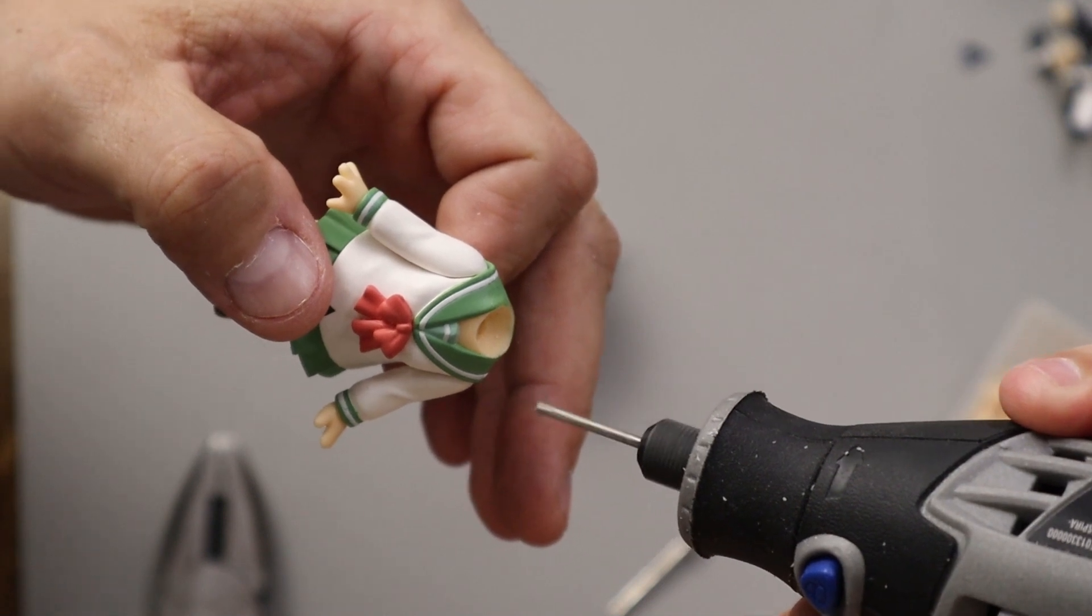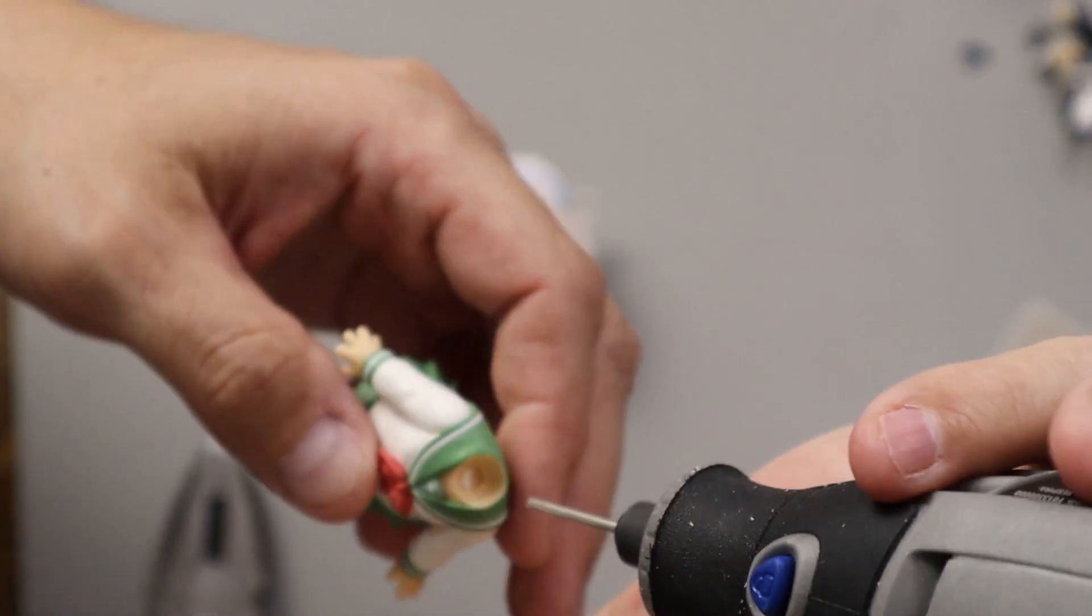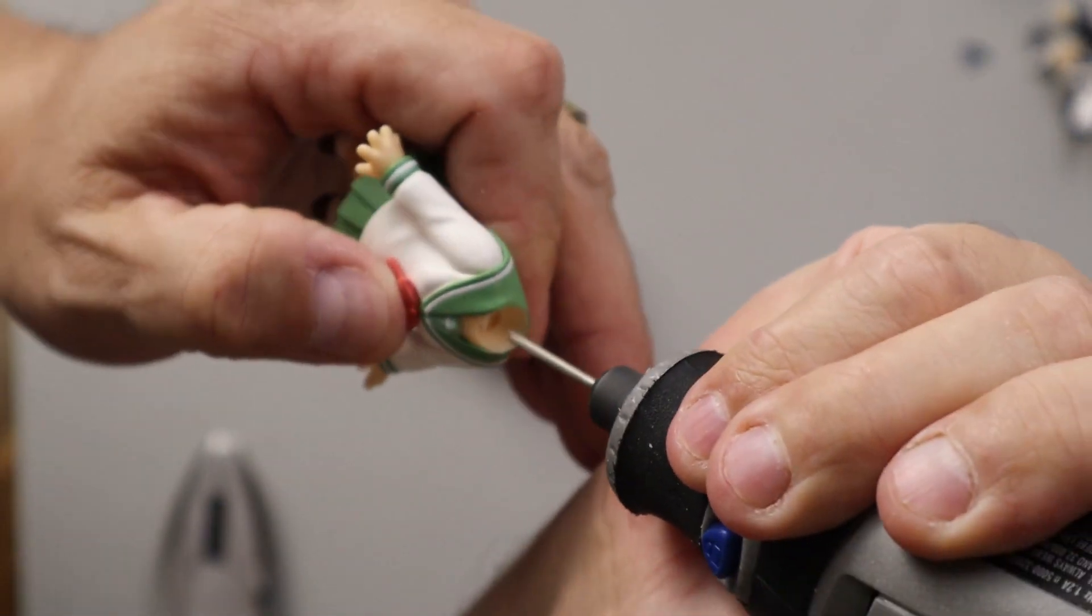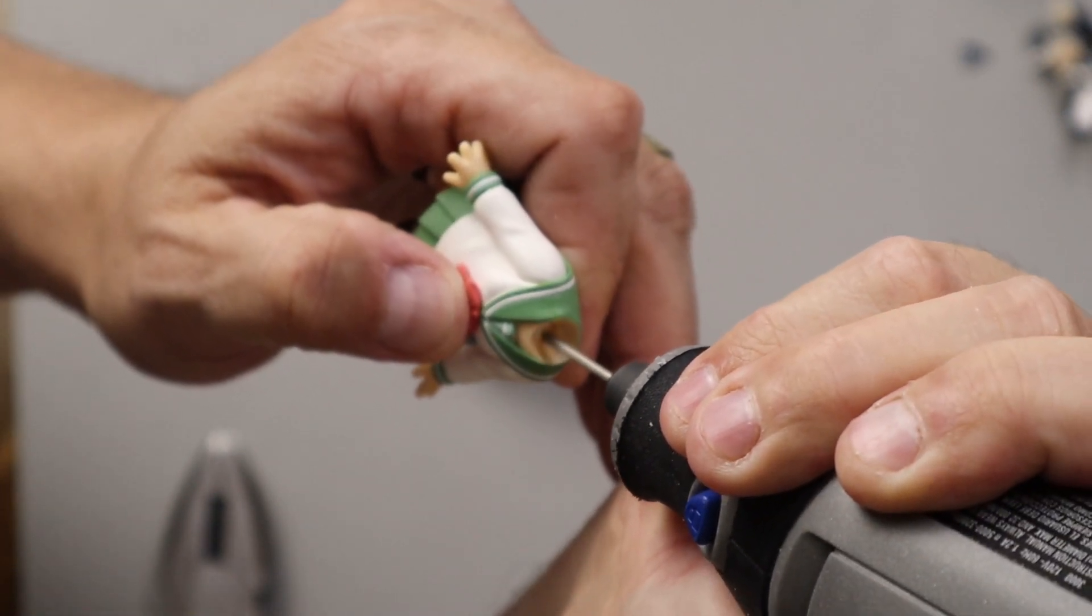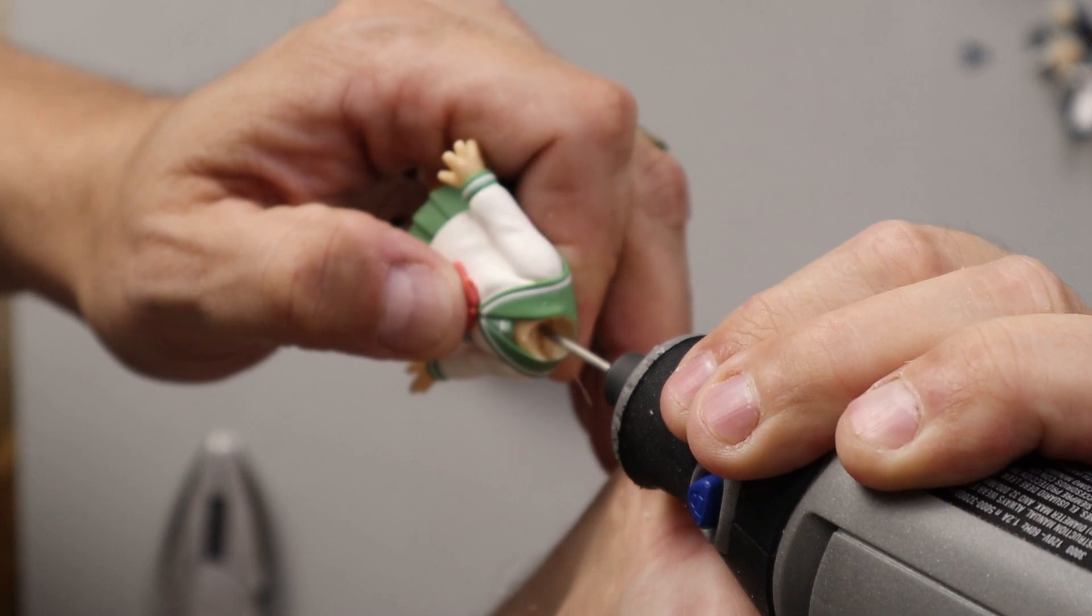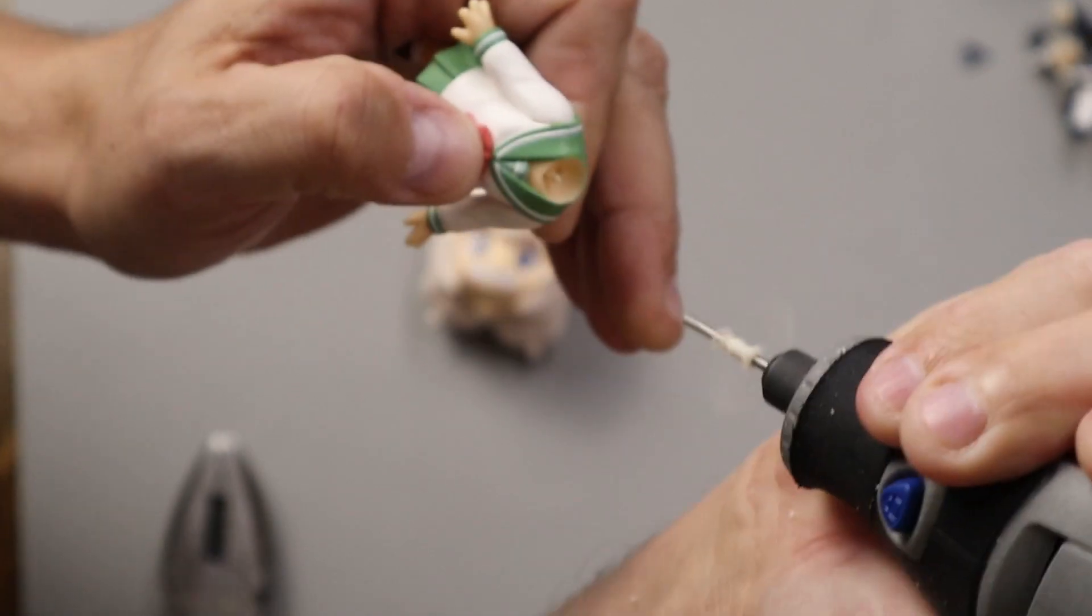The key is to get the hole drilled quickly and in the center of the peg. The longer the bit is in there, the more the plastic heats up and melts, and can damage the neck joint socket. Once you feel the tip of the bit get a good bite, give it a good solid push through until you feel it pop through to the other side.